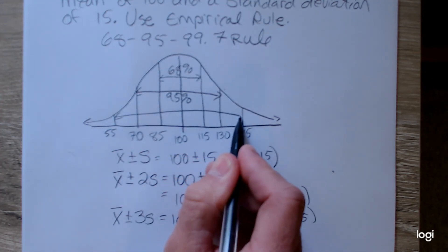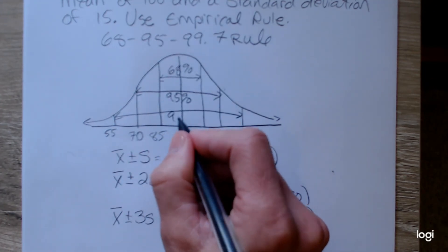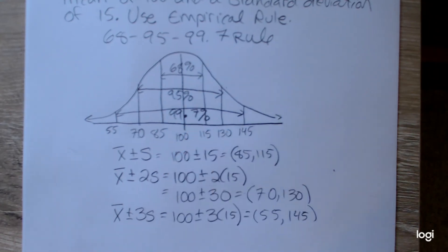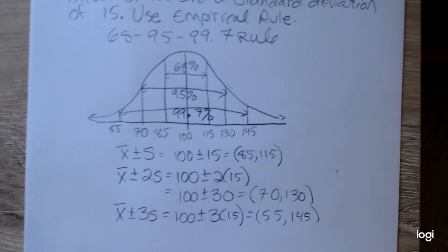So the empirical rule says that I would have captured 99.7% of the values.